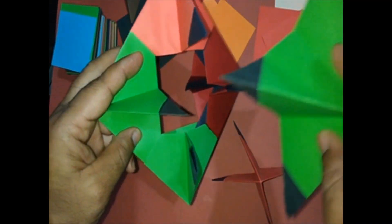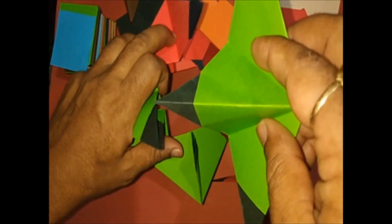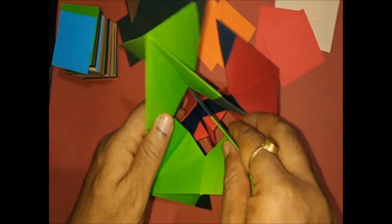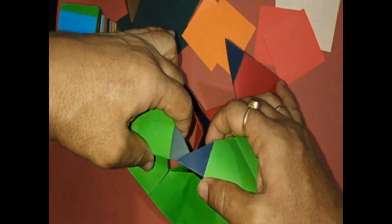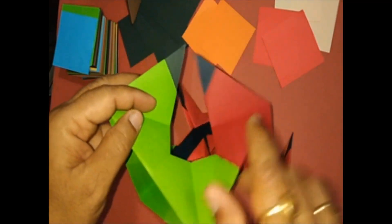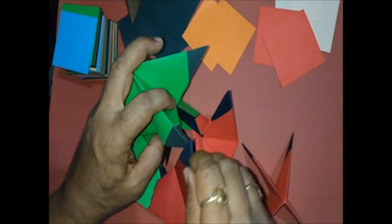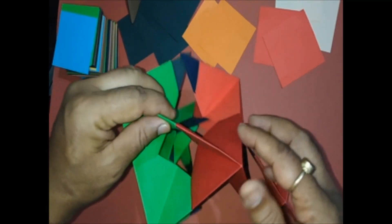Take the fifth unit and proceed to assemble. This polyhedron has got many uses. It can be used for decorations as hangers. Huge models of these were made and we have used for decorations.